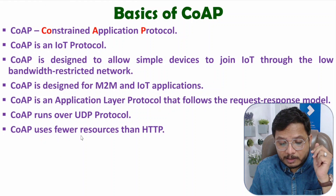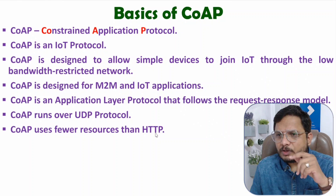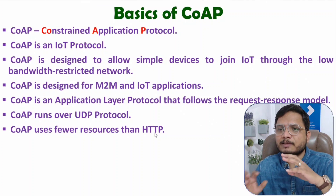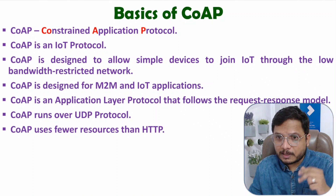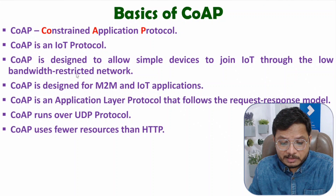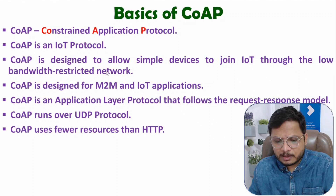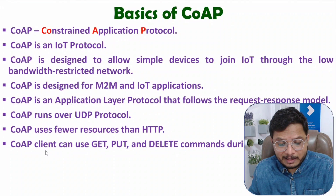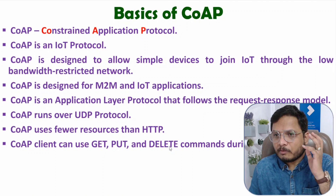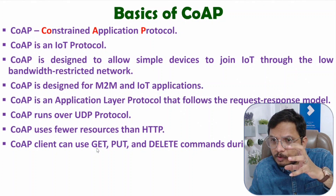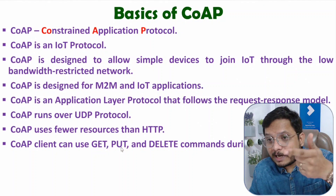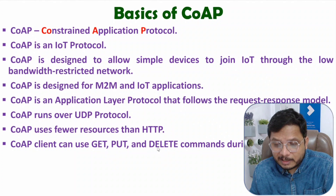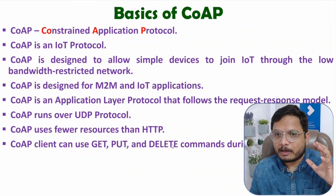CoAP uses fewer resources than HTTP. HTTP uses more resources because with HTTP you can access the World Wide Web where more resources are required and bandwidth changes with respect to applications. CoAP is designed for low bandwidth restricted networks, so CoAP uses very few resources compared to HTTP. A CoAP client can use GET, PUT, and DELETE commands. GET is used when the client wants to retrieve data, PUT is used when the client wants to update or upload data, and DELETE is used when the client wants to delete data.